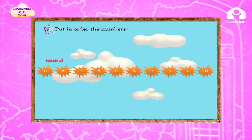Order the numbers — six, eight, three, five, two, four, one, nine, seven, ten are mixed. Put them in order: one, two, three, four, five, six, seven, eight, nine, ten. In order. Well done!